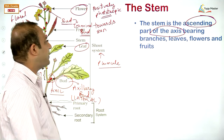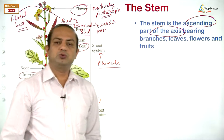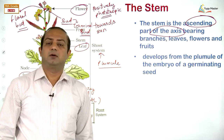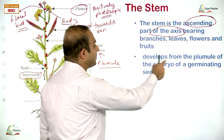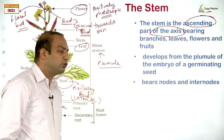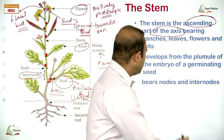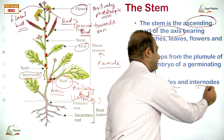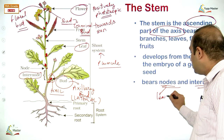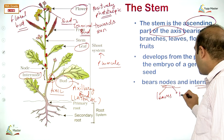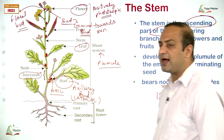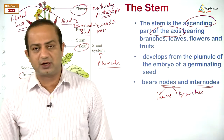The stem develops from the plumule of the embryo of a germinating seed and bears nodes and internodes. The node is the place which has leaves and from where branches will come. These are the key characters of the stem.